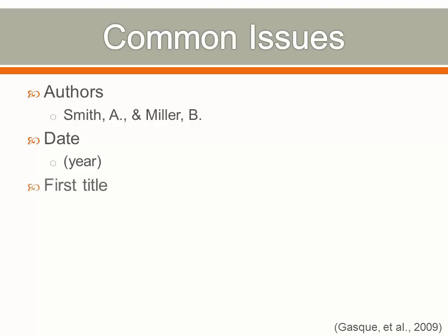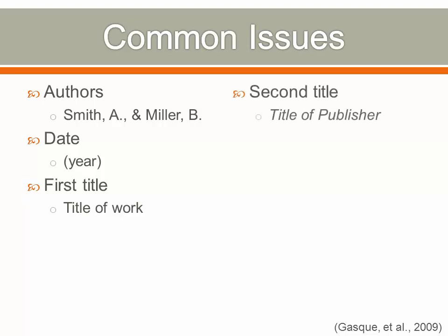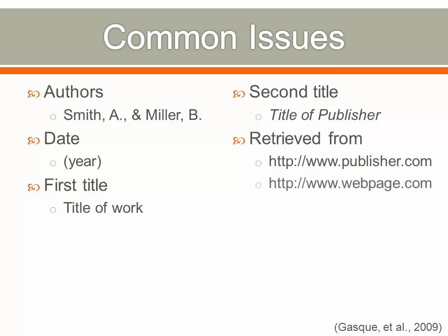The first title of the work is typically lowercase — for example, the textbook title, the title of a chapter, the title of an article, and the title of a discussion are all listed as first titles in lowercase. The second title, which may represent the publisher, is upper and lowercase and italicized — this typically includes the title of the periodical for a journal article. "Retrieved from" is required for all online sources except those with a DOI. The retrieved from is the publisher's website for journal articles, the main webpage for a website, or the exact URL for other locations. In all cases, the hyperlink to the URL is removed.